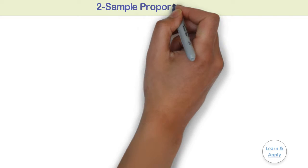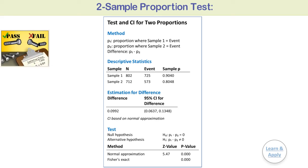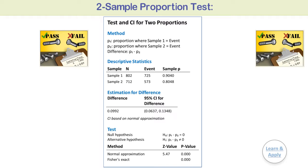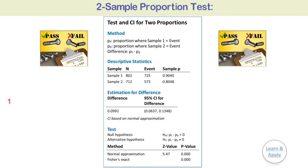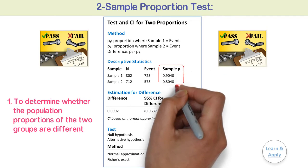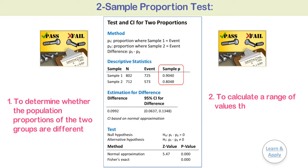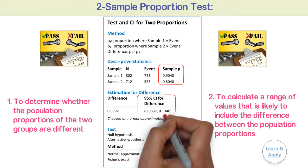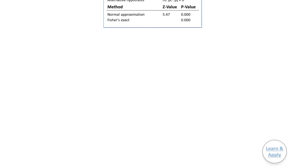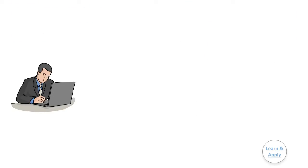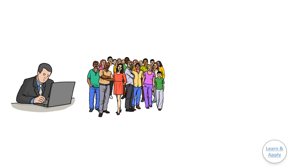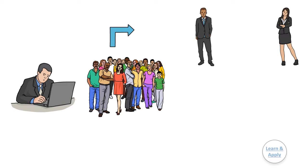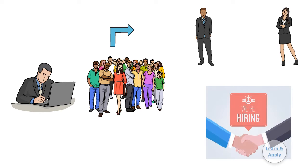Use 2 sample proportion test to do the following when your data contain only two categories such as pass or fail: to determine whether the population proportion of the two groups are different, and to calculate a range of values that is likely to include the differences between the population proportions. For example, a university financial officer samples undergraduate students to determine whether male or female students are more likely to get a summer job.